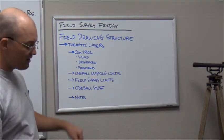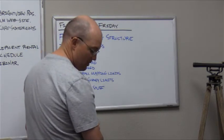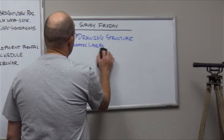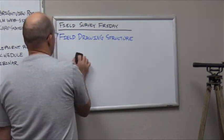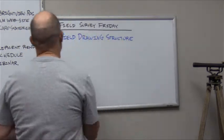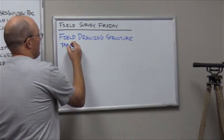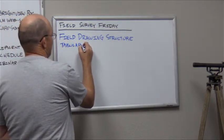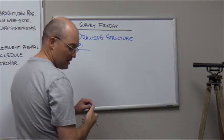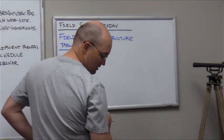Those are the thematic layers. Now I want to talk about some other structure — specifically the tabular data or attribute data that should go in your GIS. Right now at Redefine Horizons we have this set up as tables in our field drawing, but it could be an attribute table in something like QGIS or ArcGIS. So what kind of tabular data do you want?